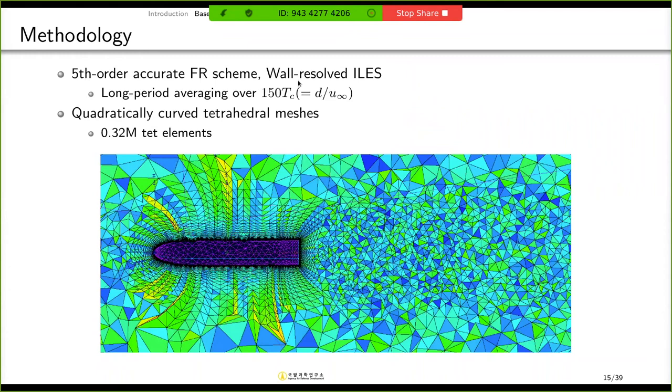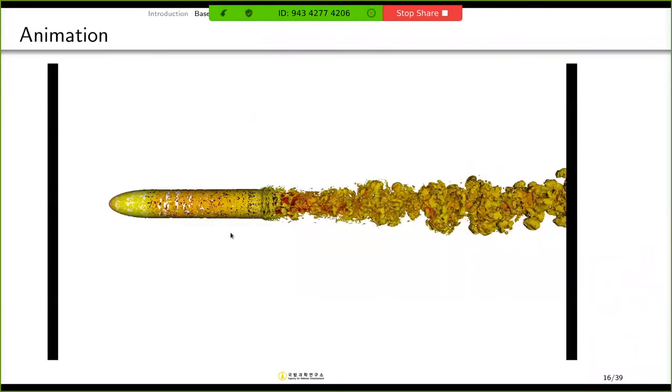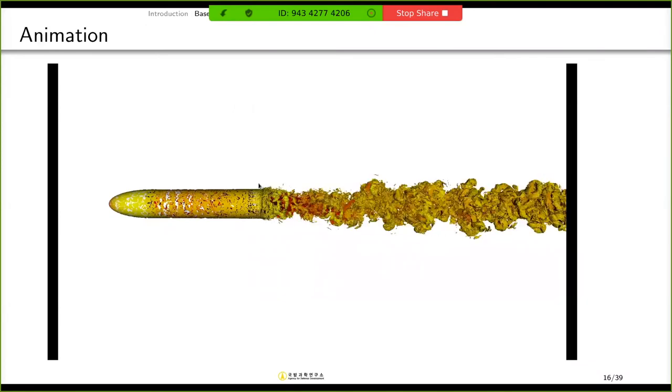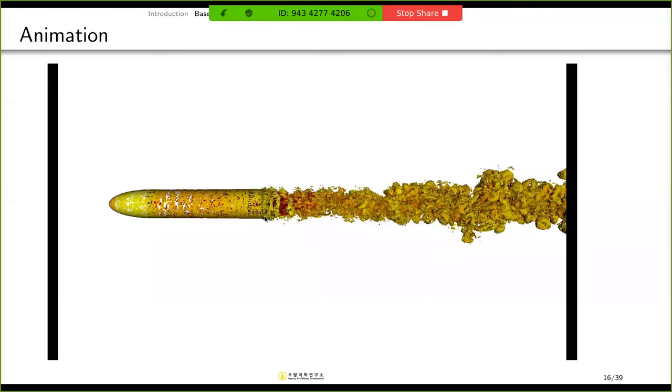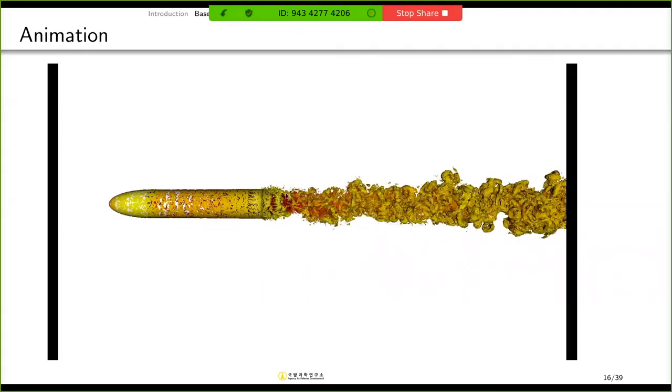I conducted the wall-resolved implicit large eddy simulation with DG solver using flux reconstruction scheme. And this is my mesh system. I use high-order curved tetrahedral mesh, whose element count is about 0.3 million. And this is the animation of Q criterion, colored by velocity. And we can see that PyFR can successfully capture detailed vortical structure in wake region.